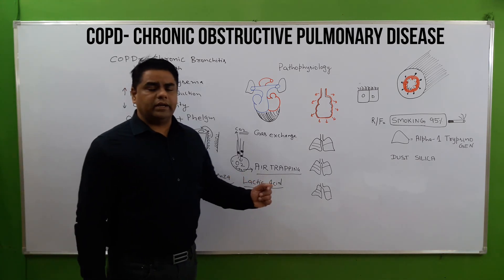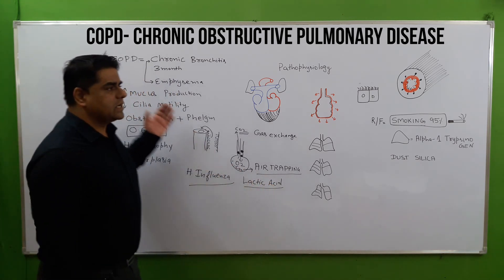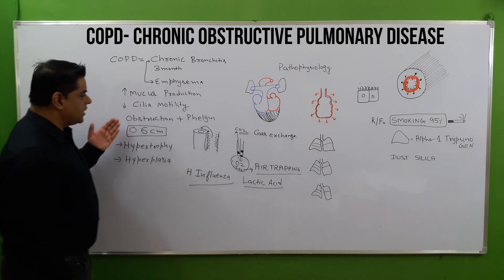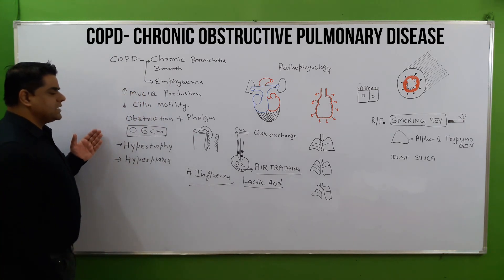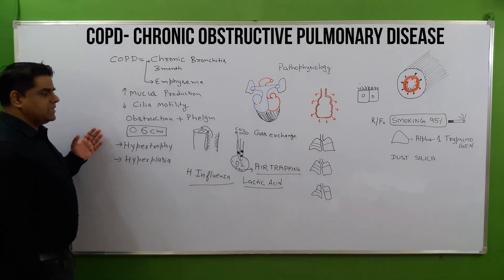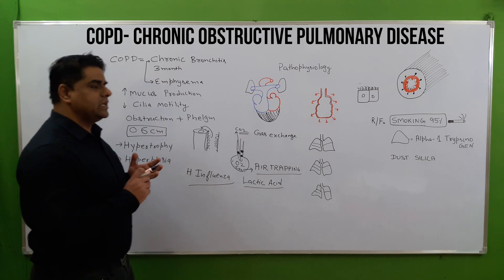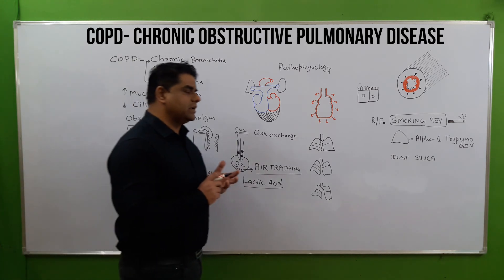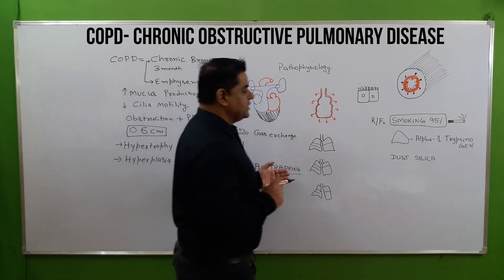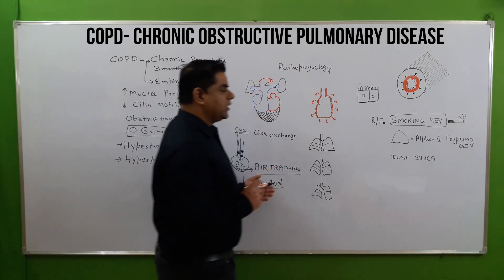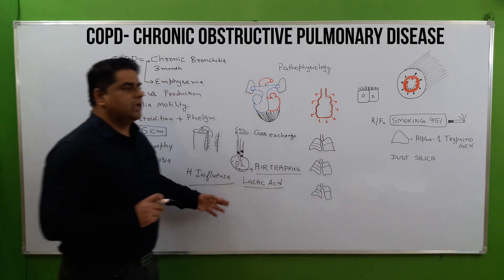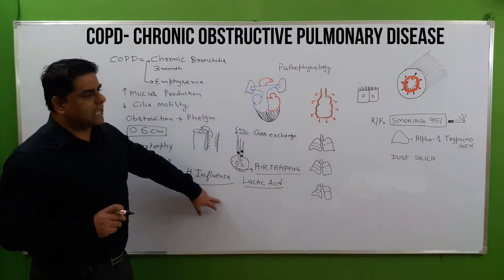In chronic bronchitis there is excessive mucus production, damage to the goblet cells, decreased cilia mobility, and CO2 accumulation inside the cells along with accumulation of lactic acid — all causing overall obstruction.